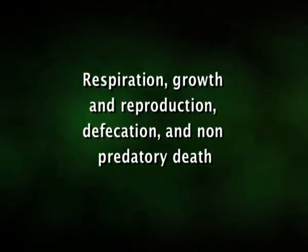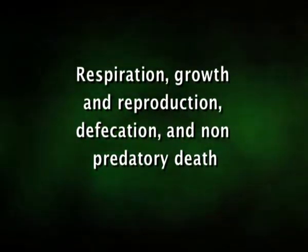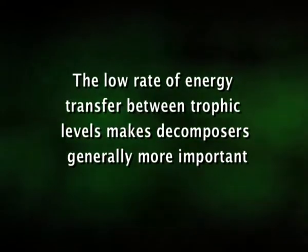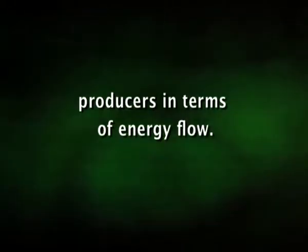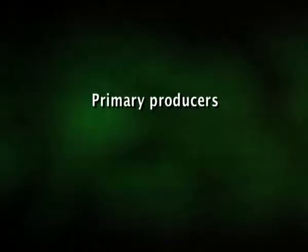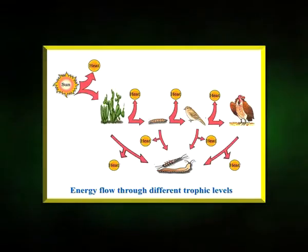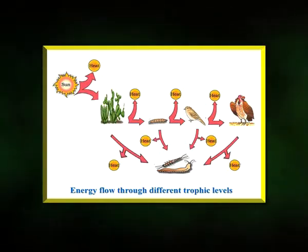Processes that reduce the energy transferred between trophic levels include respiration, growth and reproduction, defecation, and non-predatory death — organisms that die but are not eaten by consumers. The low rate of energy transfer between trophic levels makes decomposers generally more important than producers in terms of energy flow. Decomposers process large amounts of organic matter and return nutrients to the ecosystem in inorganic forms, which are then taken up again by primary producers. Energy is not recycled during decomposition but rather is released mostly as heat.